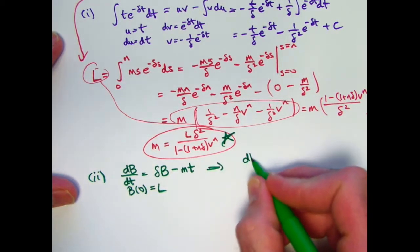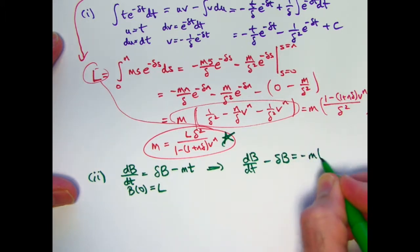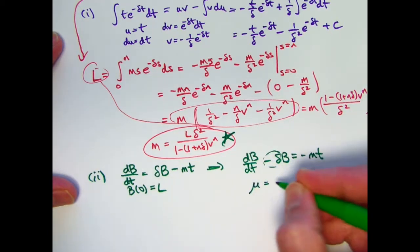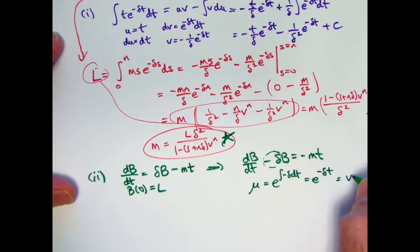Once again, we'll solve this with the method of integrating factors. Rewrite it like this. Take the coefficient of B and make it the integrand for this function here. Mu, the integrating factor, is defined to be E to the integral of whatever that function is. It's a constant function in this case, which is nice. This simplifies to E to the negative delta T, which is the same, by the way, as V to the T, if you like.